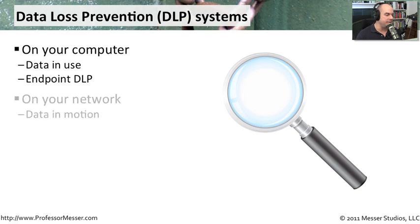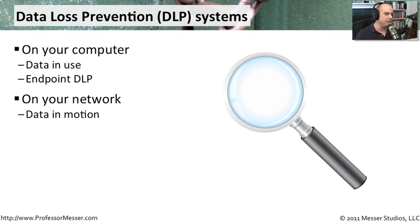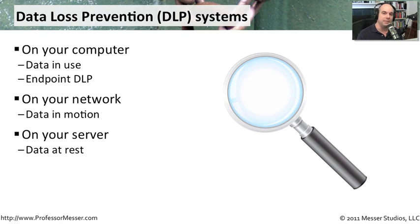Another type of DLP system is one on your network. We refer to this as data in motion, because as those packets go back and forth, they're not really stored anywhere — they're just being moved around the network. Network-based DLP systems can look for things like credit card numbers inside packets, or a specific string of text, and if they ever see those — or a certain number of them over a certain amount of time — they can alert you. Another type of DLP system is on your server where data is stored on the hard drive or in a database — we call that data at rest — and that type of system can identify when that information is moved or placed onto a hard drive and stored there.